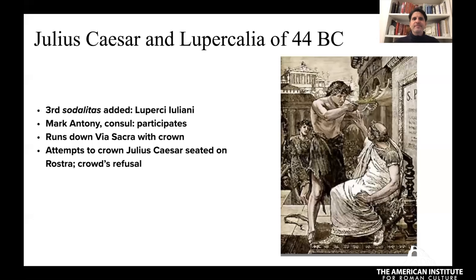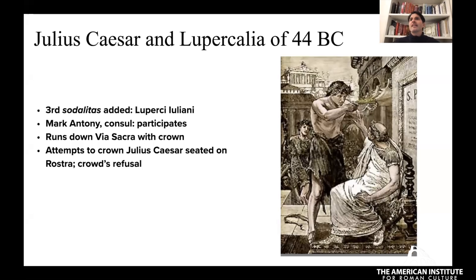Julius Caesar and the Lupercalia in 44 BC: he's adding a third group, the Luperci Iuliani. Mark Antony, the consul at the time, is one of them, running around essentially naked, and then comes down and tries to crown Julius Caesar before the crowd in the Forum. The crowd boos each time he tries; each time Julius Caesar refuses, the crowd cheers more. Basically the people of Rome are saying: we don't want a king. It seems to have been a publicity stunt — let's see how far we can push this. Maybe everyone will cheer when he's crowned. Julius Caesar was just an officiator in the spectacle, not running around naked himself.